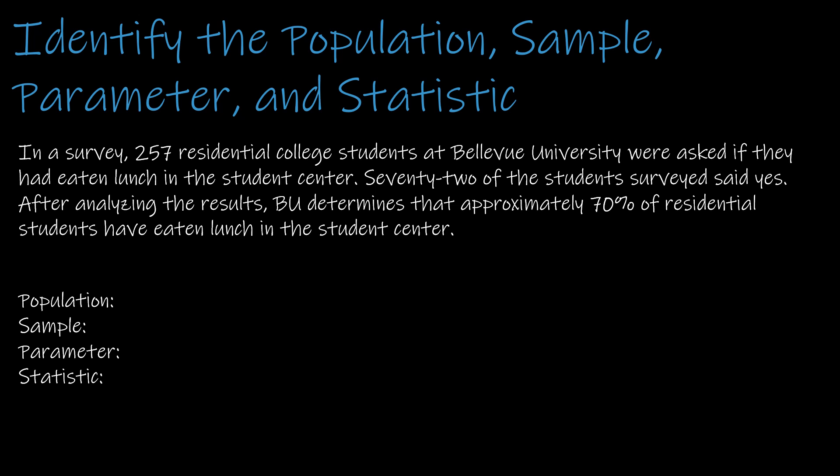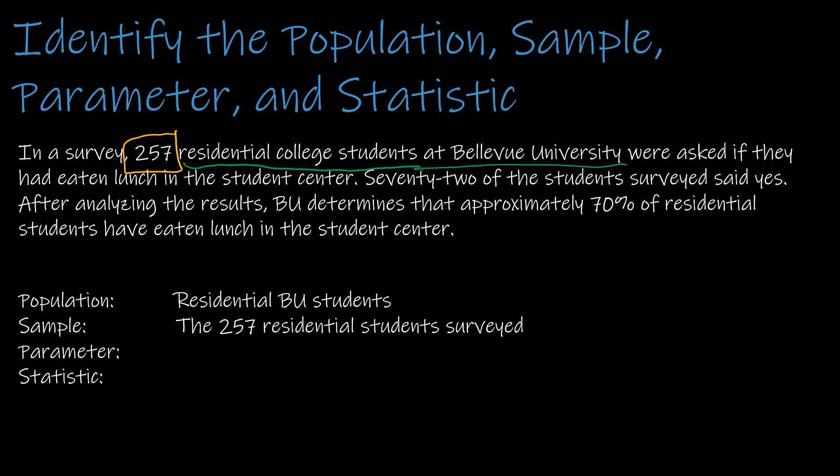The population is going to be everybody that we're studying — not the 257, but residential college students at Bellevue University. We're not just interested in the 257 that we actually spoke to; we're interested in all residential students, meaning students taking classes on campus as opposed to online. The sample would be the part of the population we actually talked to: the 257.